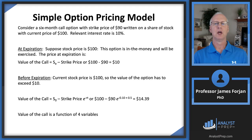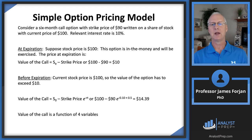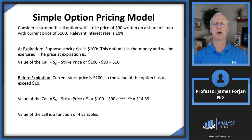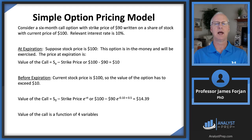The best way to explain the simple option pricing model is through an example. Suppose we've developed a model where call prices are a function of four variables: the current stock price, the exercise price, the time to expiration, and some interest rate. Here's the example: a six-month call option with a strike price of $90, written on a stock with a current price of $100, and a relevant interest rate of 10%. We have the right but not the obligation to buy at $90 when the stock trades at $100 — clearly an in-the-money option.